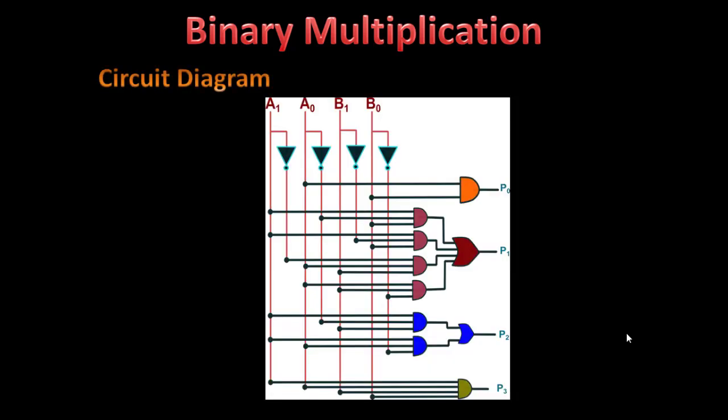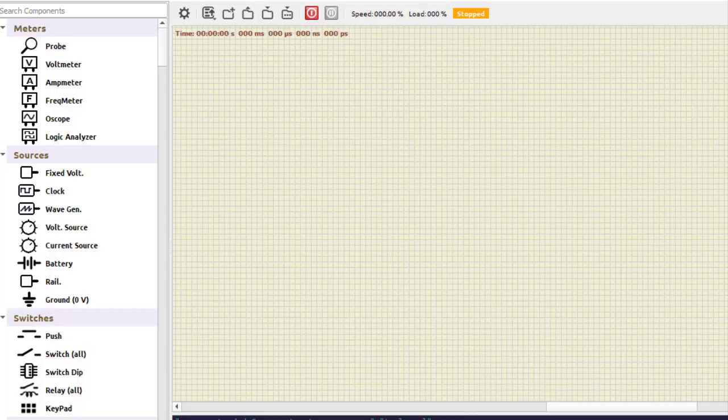This is the final circuit diagram showing p0, p1, p2, and p3. Now we will implement this using Simulide. You can implement it using any other software — I am using this one. We will then verify the output. So now we are in Simulide. Let us construct the circuit. I will go fast to save time because the circuit has so many components.